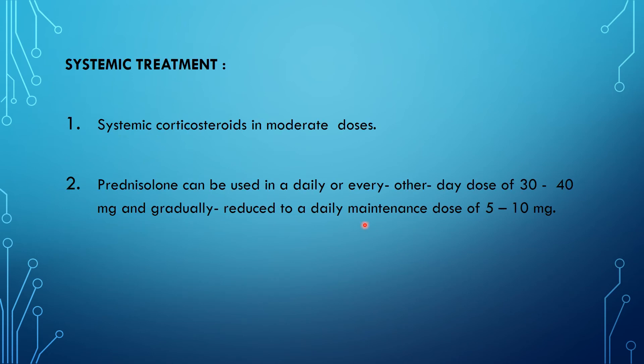If the condition is not subsiding with local treatment, especially in moderate and severe cases, you need to go for systemic corticosteroids. Prednisolone can be used in a daily or every-other-day dose of 30 to 40 mg and gradually reduced to a daily maintenance dose of 5 to 10 mg.